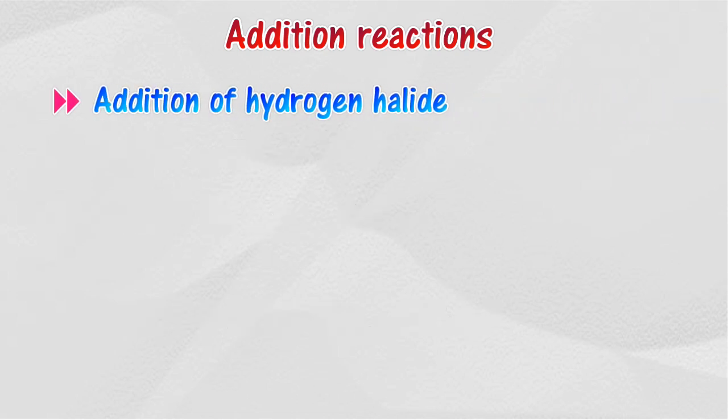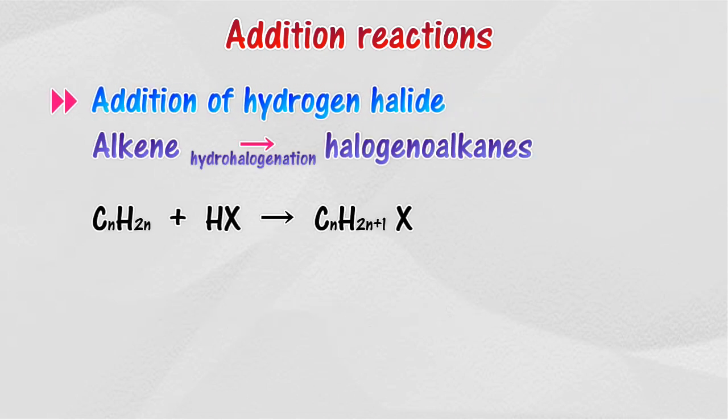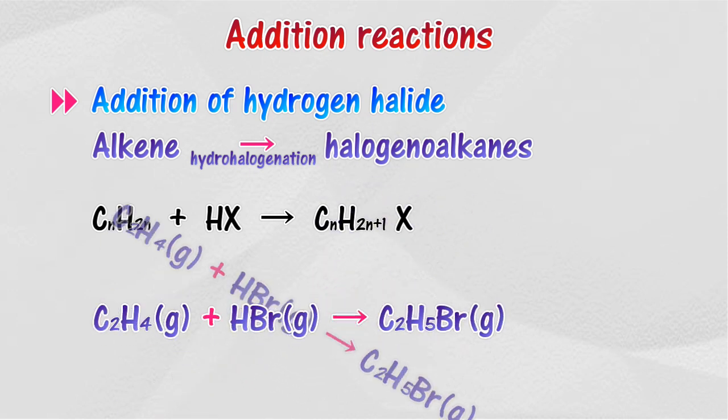Alkenes react with hydrogen halide gas to produce halogenoalkanes. In hydrohalogenation, only one halogen atom is added during the reaction.